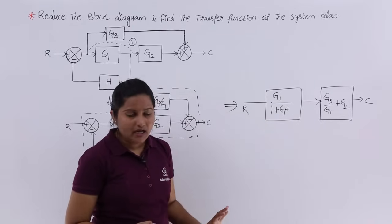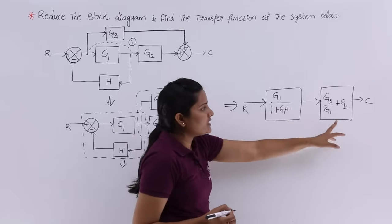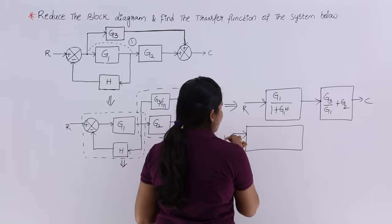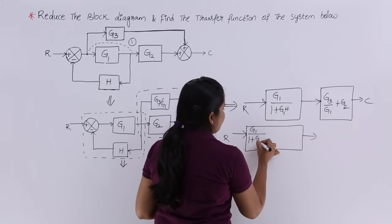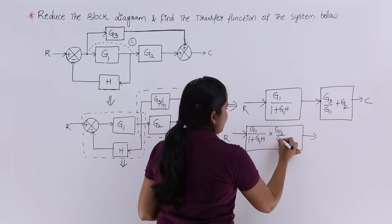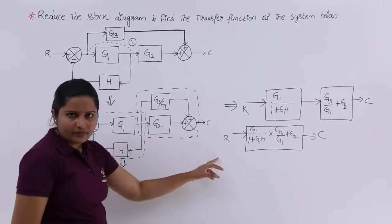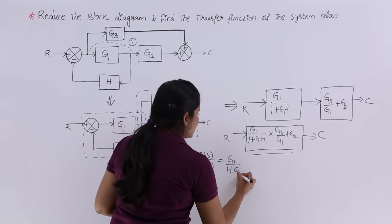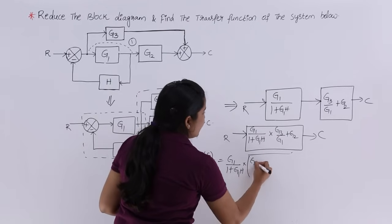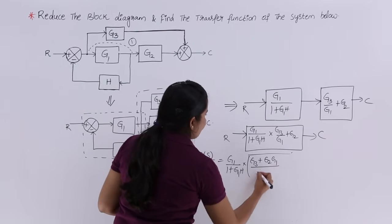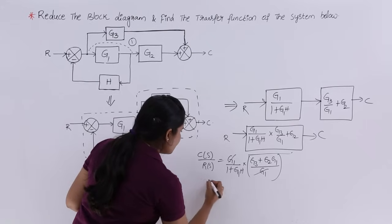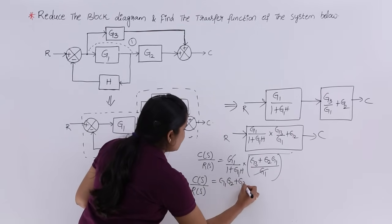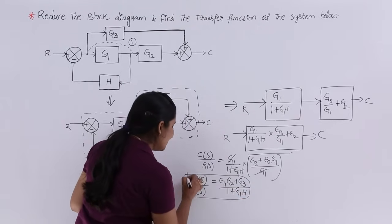Now my block diagram is reduced but I still have two blocks in series. These two series blocks can be multiplied to make a single block: G1/(1 + G1·H) multiplied by (G3/G1 + G2). The transfer function C(s)/R(s) is this combined gain. Cross-multiplying and cancelling G1 terms, the final transfer function C(s)/R(s) equals G1(G2 + G3) divided by (1 + G1·H). This is the transfer function of the given block diagram.